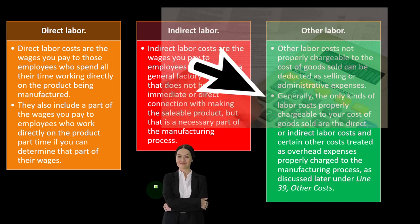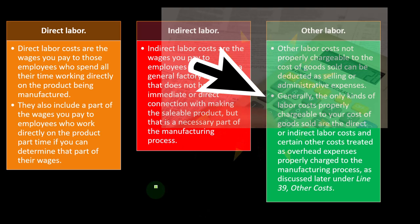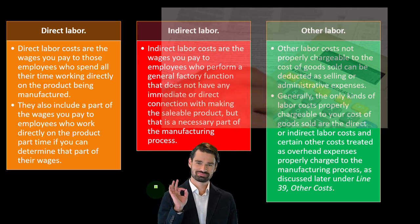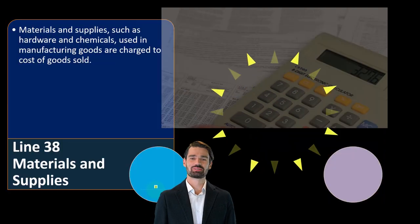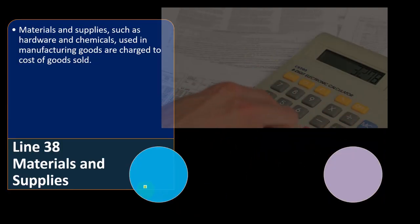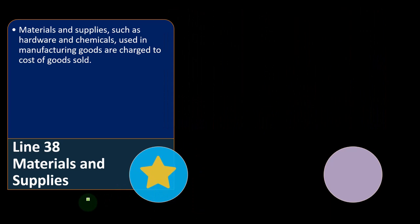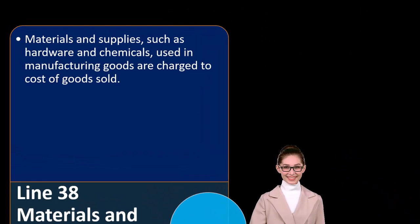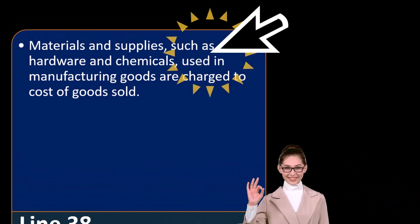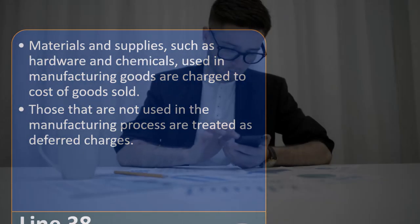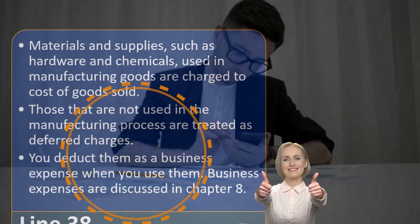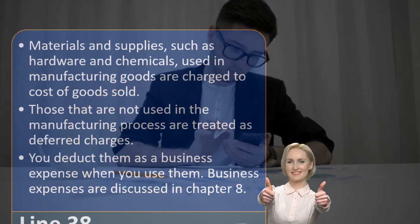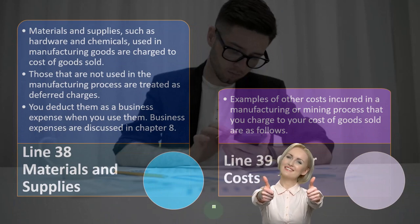Generally, the only labor costs properly chargeable to cost of goods sold are direct or indirect labor costs and certain other costs treated as overhead expenses charged to the manufacturing process. Line 38 — materials and supplies: materials and supplies such as hardware and chemicals used in manufacturing goods are charged to cost of goods sold. Those not used in the manufacturing process are treated as deferred charges and deducted as a business expense when used.